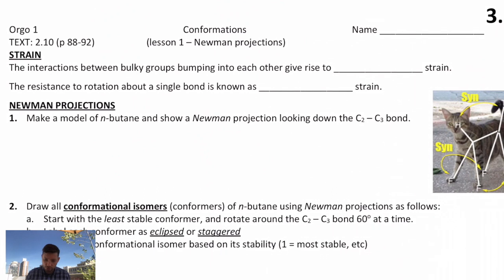So, today we're going to talk about strain. There's two main types I want you to know the definitions of. The interactions between bulky groups in molecules is called steric strain, and then the resistance to rotation about a single bond is called torsional strain, and both of those work together in what we'll look at today.